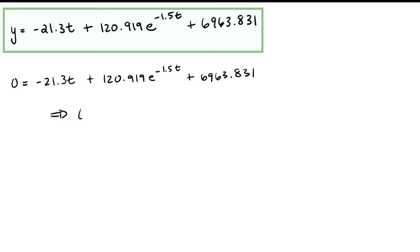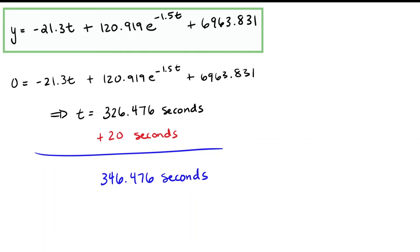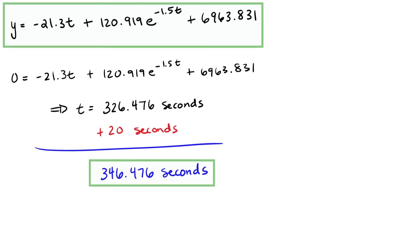Setting our height equation equal to 0 and using our calculator to solve, we find that the parachuter hits the ground when t equals 326.476 seconds after opening the parachute. But we need to remember there was also the initial 20 seconds of free fall without the parachute. So the total fall time is 346.476 seconds. That was a lengthy problem, but we did basically the same process twice under slightly different air resistance and different initial conditions.